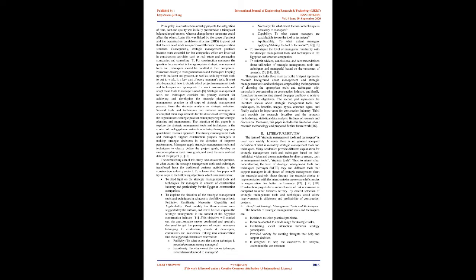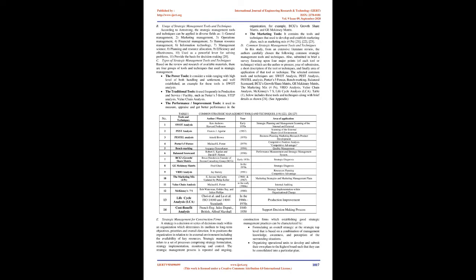Principally, in construction industry projects, the integration of time, cost, and quality was initially presented as a triangle of balanced requirements, where a change in one parameter could affect the others. Later this was linked by the scope of project and the Organization Breakdown Structure (OBS) to point out that the scope of work was performed through the organization structure. Consequently, strategic management practices became more essential for companies involved in construction activities such as real estate, contracting, and consulting. For construction managers, the question became: what are the appropriate strategic management tools and techniques to be handled at their companies?